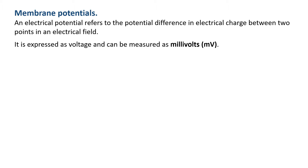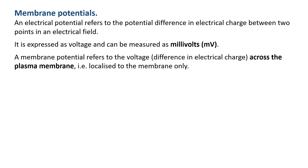In order to talk about resting membrane potentials, we need to talk about membrane potentials. An electrical potential generally refers to the potential difference in electrical charge between two points in an electrical field — so we're talking about a difference between two places. It's expressed generally as voltage; in the human body we measure it as millivolts. A membrane potential refers to the voltage, or the difference in electrical charge, across the plasma membrane — our two points being inside and outside the membrane — so it is localized to the membrane only.